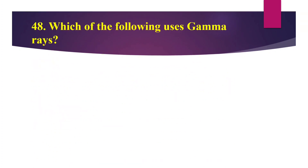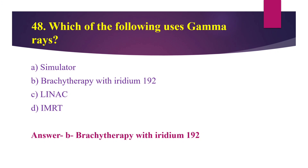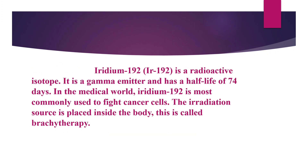Question number 48: Which of the following uses gamma rays? Option A: simulator, Option B: brachytherapy with iridium-192, Option C: linac, Option D: IMRT (intensity modulated radiation therapy). The answer is Option B — brachytherapy with iridium-192. Iridium-192 is a radioactive isotope and a gamma emitter with a half-life of 74 days. In medicine, it is most commonly used to fight cancer cells by placing the iridium source inside the body — this is called brachytherapy.